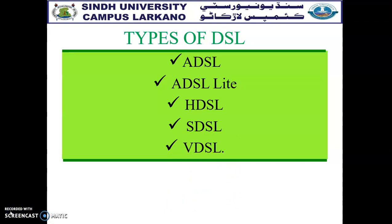ADSL uses only 1.1 megahertz bandwidth for data transmission. ADSL is also an adaptive technology, and the system uses a data rate based on the conditions of the local loop line. ADSL is not fixed — it may change from time to time, and its version will be updated according to its data rate.